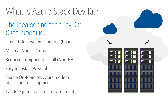So what is the Azure Stack Development Kit? The idea behind the DevKit, or One Node, is that it's a limited deployment duration — measured in hours. It's minimal nodes — it's one node. No special network switches or anything like that, like the integrated system would have. It's a reduced component install; obviously less VMs, not highly available. It's easy to install — essentially PowerShell — but we even have a wrapper now that's a UI wrapping that PowerShell up to help you kick it off. It enables on-premises Azure in modern application development, and you could, depending on your configuration, integrate it into a larger environment.